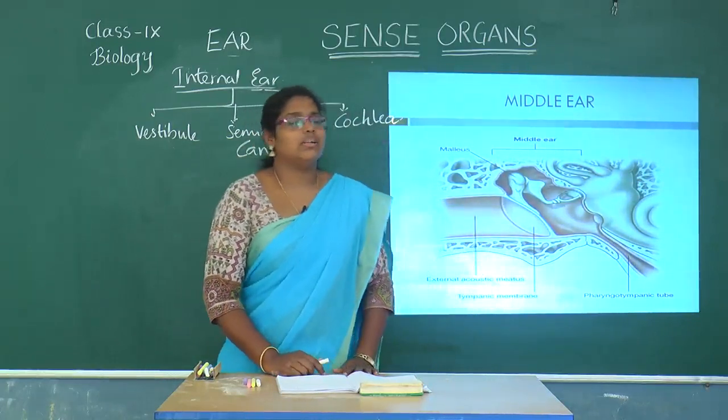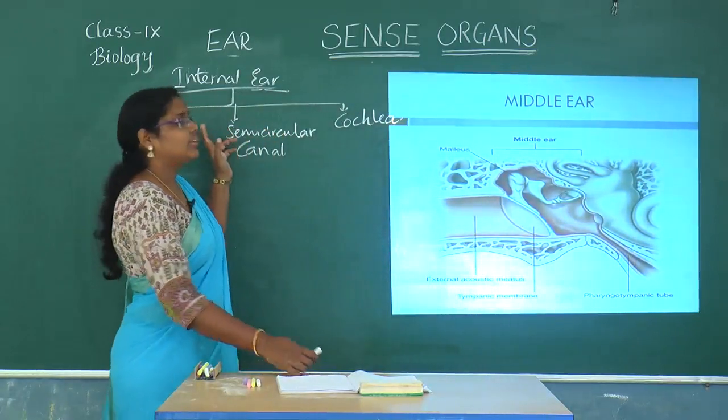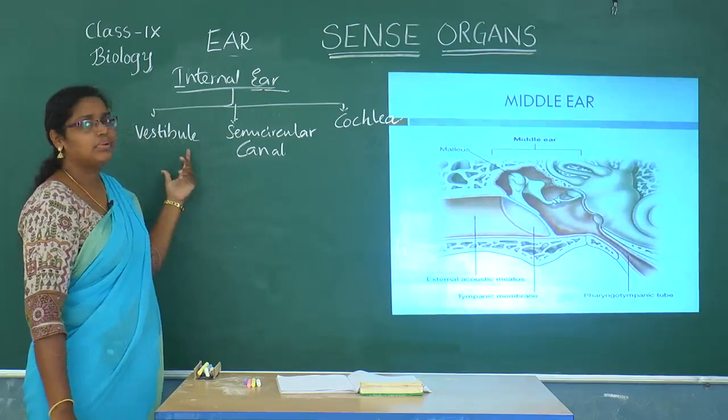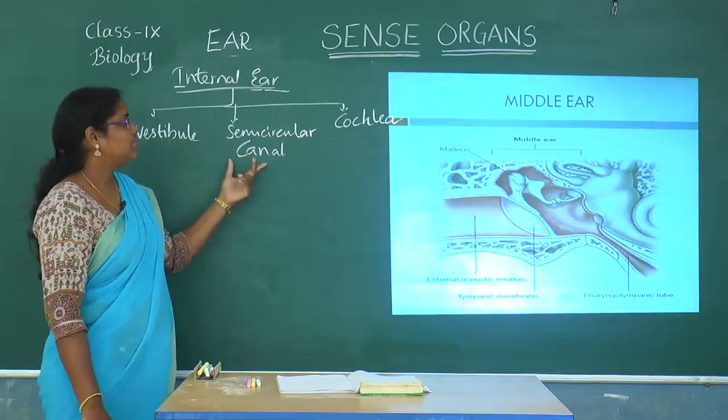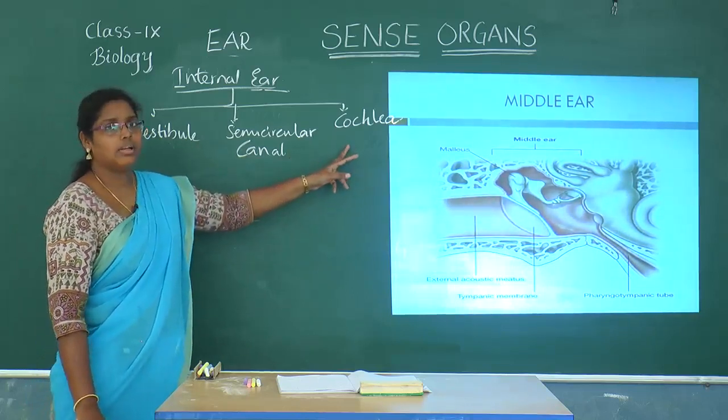The internal ear has three parts: the vestibule, semicircular canal, and cochlea.